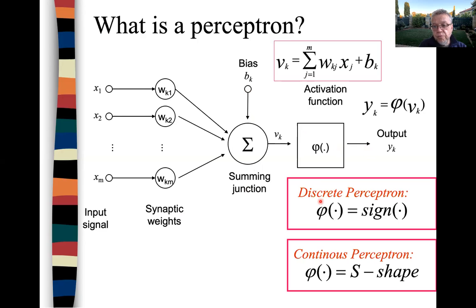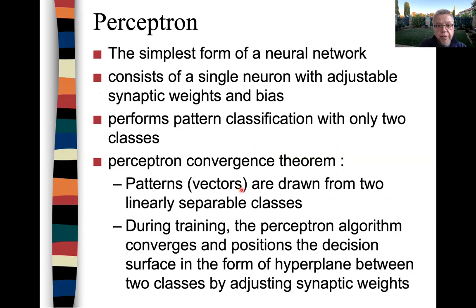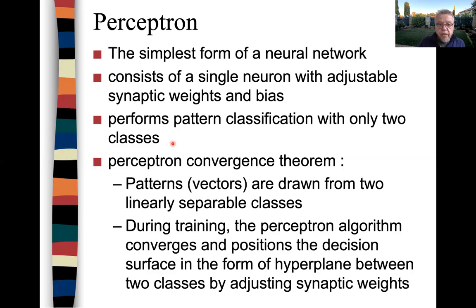We have two types of perceptron: the discrete perceptron, where the activation function is the sign function, and the continuous perceptron, where the activation function is the S-shaped sigmoid function. It performs pattern classification with only two classes. So if you have a two-class problem, we can use the perceptron to achieve classification into a positive and negative class.